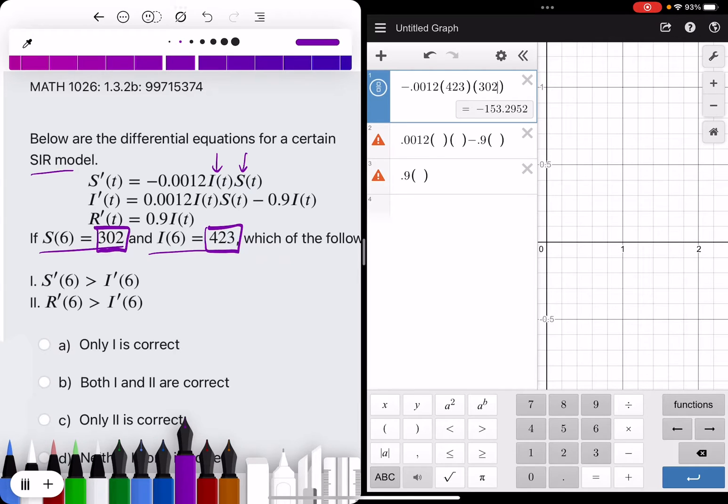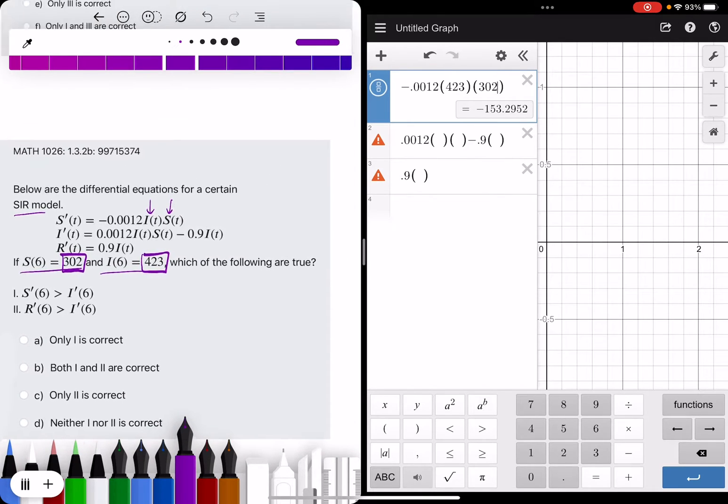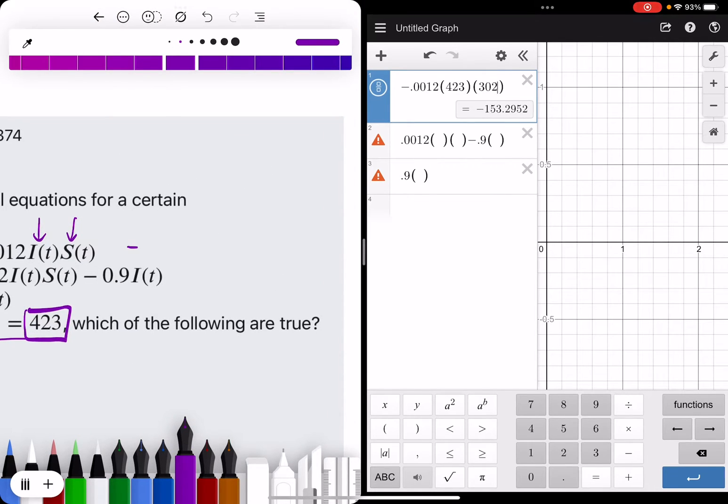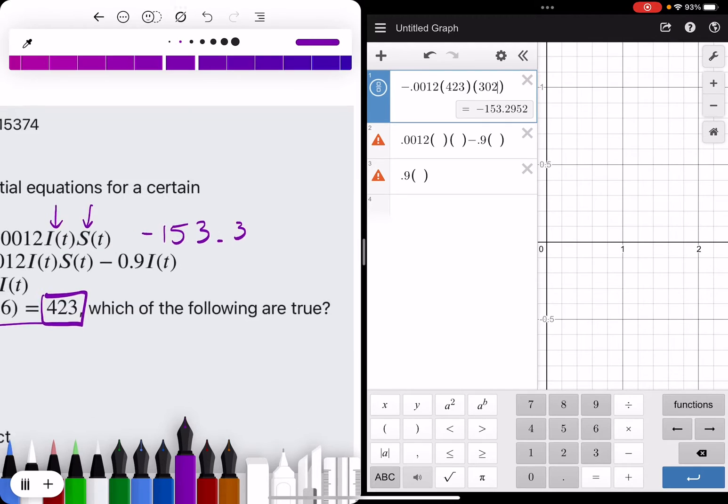So what I have in this first box is S prime already. So that's negative 153. I wonder if I can write this down. Next to it, let's do negative 153.3.